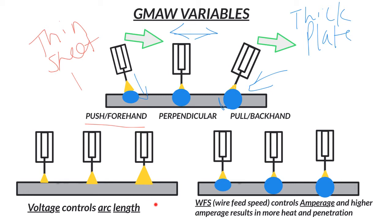Next: voltage and wire feed speed. Voltage is electrical pressure and it controls your arc length. For example, this might be 16 volts, this 19 volts, and maybe 24 volts. You can see the distance of the arc on each of these. The higher the voltage, the higher chance you'll have for spatter issues, but it's also going to spread out your bead and wet in on the sides a little bit better.